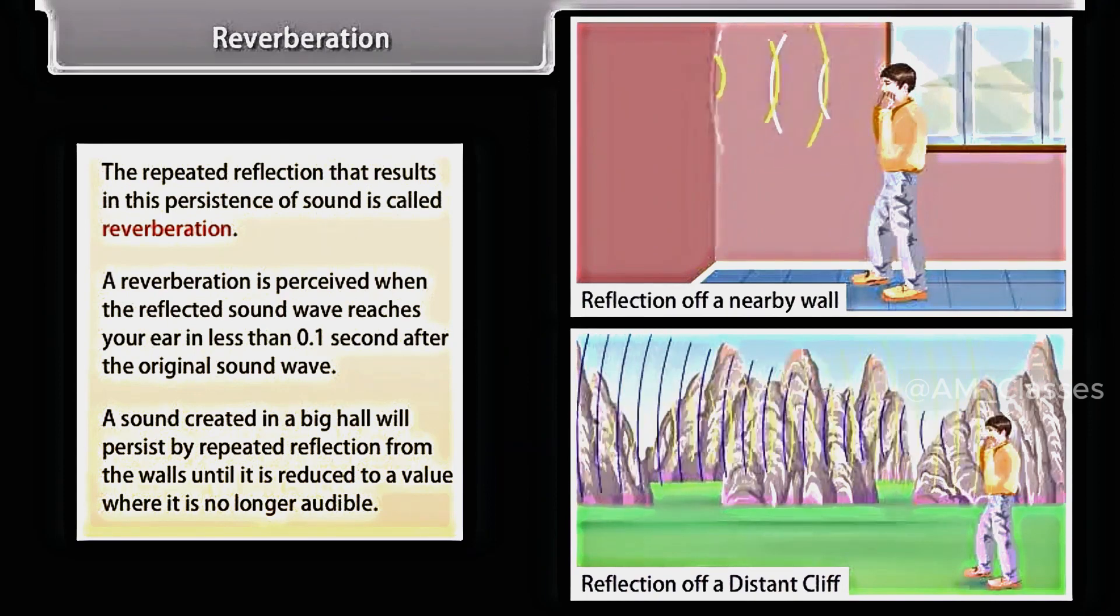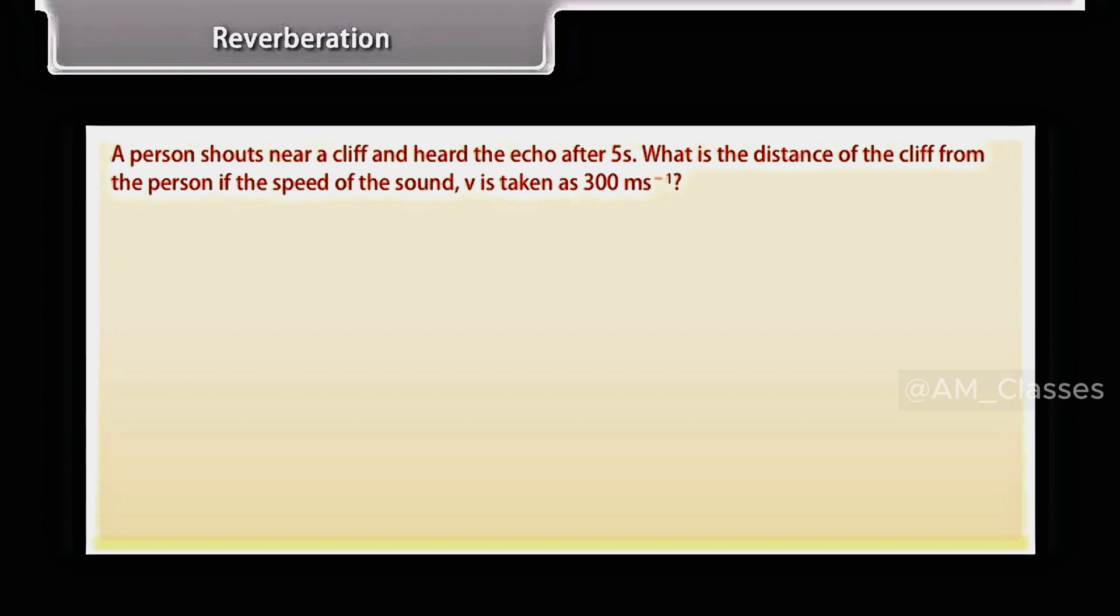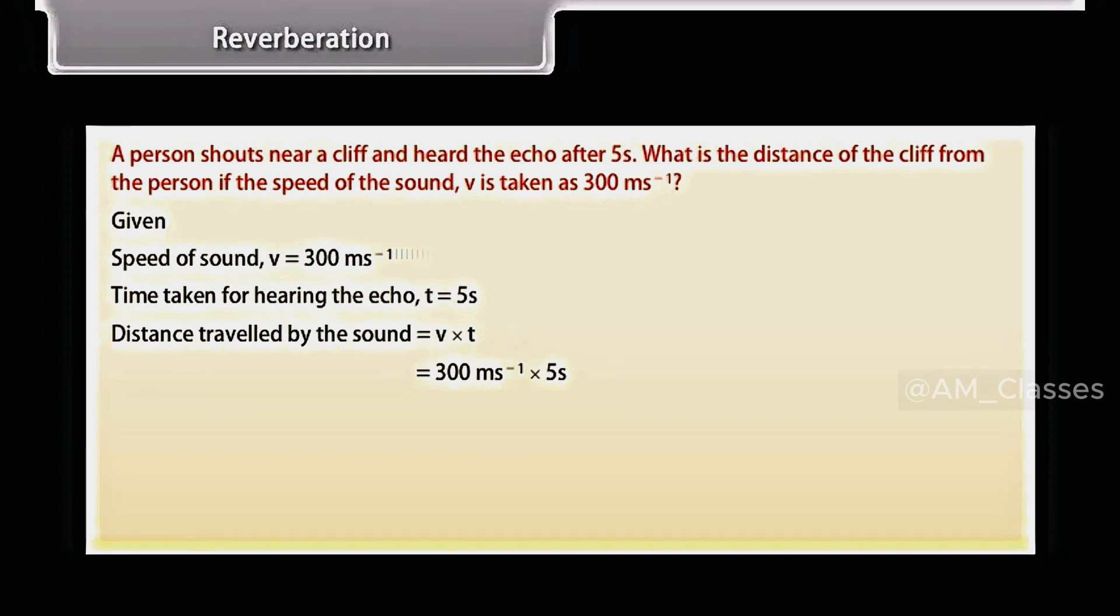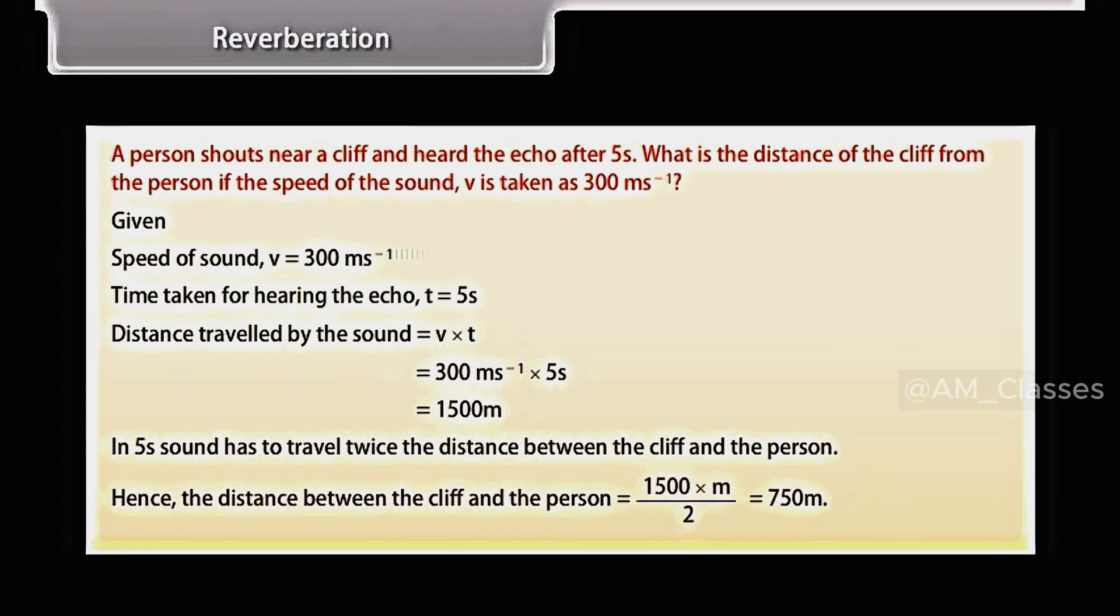Let's now solve a problem. A person shouts near a cliff and hears the echo after 5 seconds. What is the distance of the cliff from the person if the speed of the sound, V, is taken as 300 meters second raised to the power minus 1? Given that the speed of sound, V, is 300 meters second raised to the power minus 1, time taken for hearing the echo, T, is 5 seconds. Distance traveled by the sound is equal to V into T, which is equal to 300 meters second raised to the power minus 1 into 5 seconds is equal to 1500 meters. In 5 seconds, sound has to travel twice the distance between the cliff and the person. Hence, the distance between the cliff and the person is 1500 meters by 2, that is 750 meters.